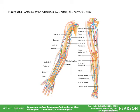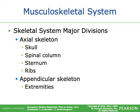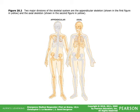The anatomy of the extremities includes arteries, nerves, and veins. The skeletal system has two major divisions: the axial skeleton, which includes the skull, spinal column, sternum, and ribs; and the appendicular skeleton, which includes the extremities. The appendicular skeleton is the extremities; the axial skeleton is everything else.